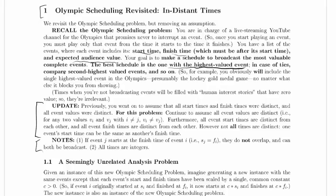So we're gonna look for our highest valued event, and then if two schedules both have the same highest valued event, we'll set those aside and we'll look at second highest valued event, and if those are the same we'll set those aside, look at third, look at fourth, look at fifth, and so on and so forth. So for example you obviously will include the single highest valued event in the Olympics, presumably the hockey gold medal game, no matter what else it blocks you from showing.